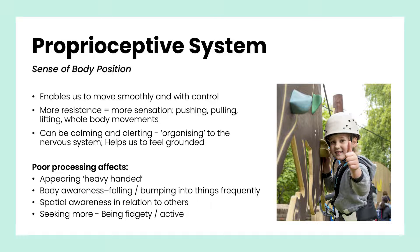Our proprioceptive system is our sense of body position. Every time we move, our muscles, joints, and ligaments send messages to our brain about where our body parts are and what they're doing. Without opening my eyes in the morning I can hit the snooze button — that's proprioception. It enables us to move smoothly and with control. If there is more resistance to movement, this system fires more — pushing, pulling, lifting, or big gross motor movements pass more information to the brain. Proprioception can be both calming and alerting, helping us feel grounded and more in control.